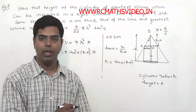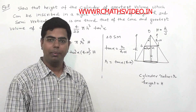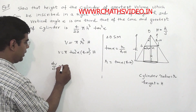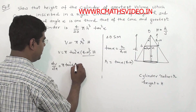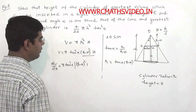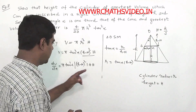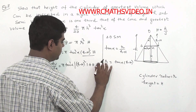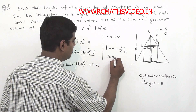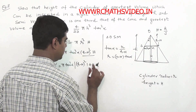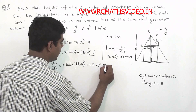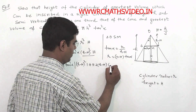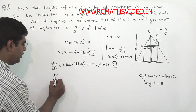Here π and tan(alpha) are constants, and small h is also constant. Only capital H is the variable. To find maximum or minimum volume, we differentiate with respect to H. So dV/dH = π tan²(alpha) × [(h − H)² × 1 + H × 2(h − H) × (−1)].